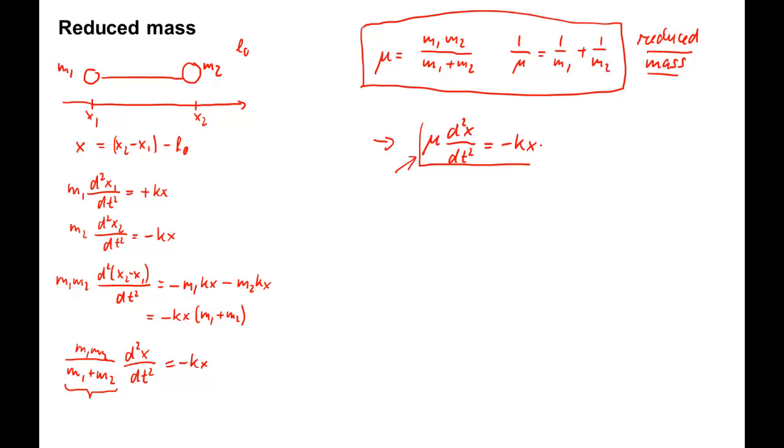For this system, we can write down the solution and the solution will contain the oscillator frequency, which will be omega equals the square root of k divided by mu. Again, the oscillator frequency is identical in expression to the spring with a single mass, except that m, the mass, is replaced by the reduced mass mu.